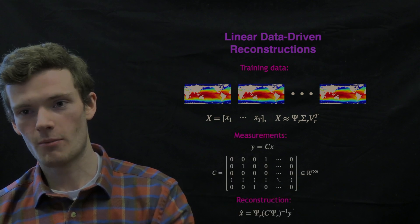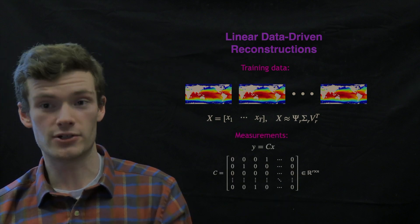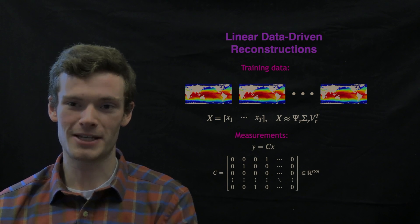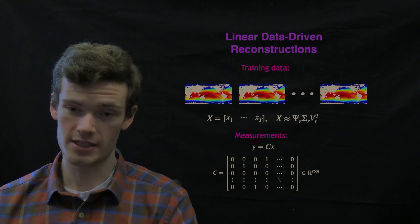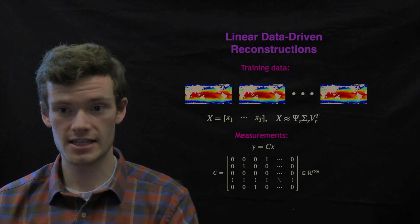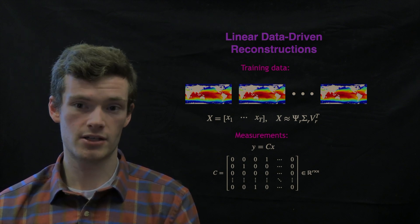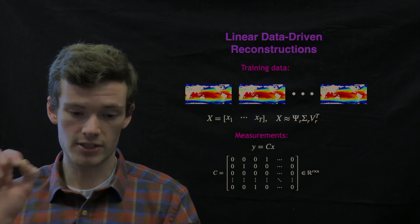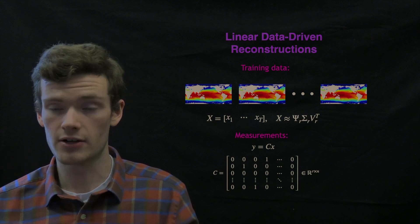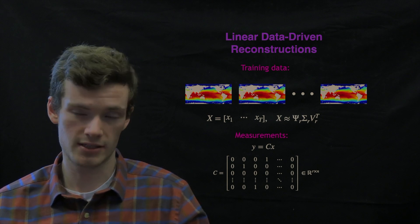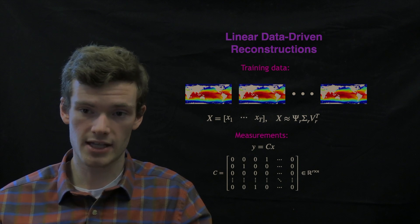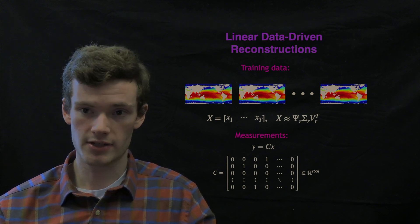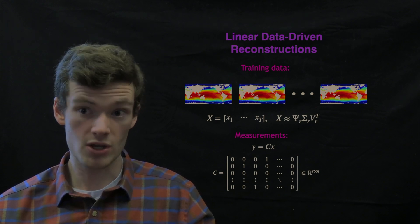But today, we'll use it primarily to get what are called POD modes, or this ψ_r matrix right here. But first we'll talk about the types of measurements that are allowed in this linear data-driven reconstruction. Unsurprisingly, given how many times I've said the word linear, we expect a linear measurement of the system. And so that amounts to this measurement matrix C. Moreover, we'd like this C to consist of rows of the identity matrix. What that means, sort of pictorially, is that it picks out individual sensor locations.